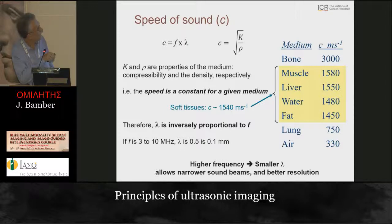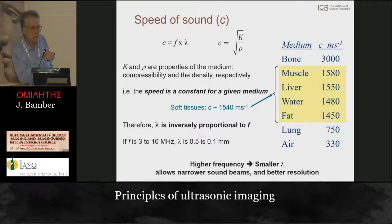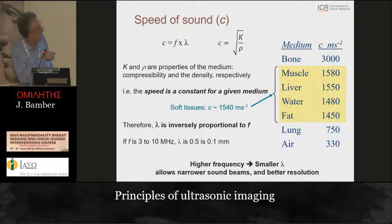Speed equals frequency times wavelength - that's a useful simple equation to remember. Compressibility and density are properties of the tissue, the medium, and therefore speed is also a property of the medium. But frequency is controlled by us - we set it with the transducer we choose - and therefore the wavelength we get is a property of the medium given the frequency we've chosen.